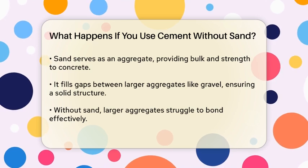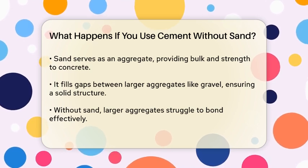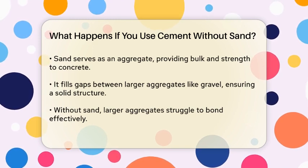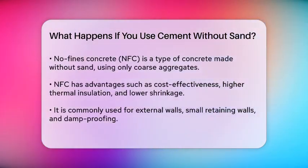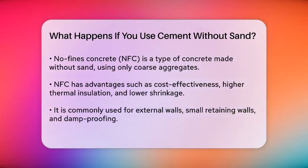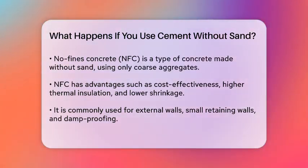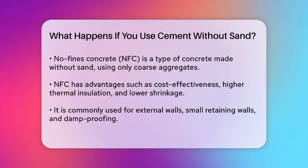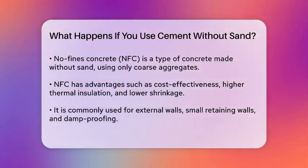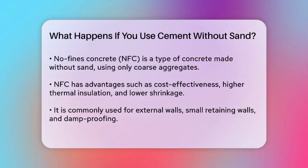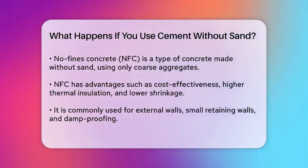There is, however, a type of concrete that can be made without sand, known as no-fines concrete, or NFC. In NFC, the fine material — sand — is eliminated, and only coarse aggregates are used. These aggregates are held together by a thin layer of cement paste. This type of concrete has its own set of advantages, such as being more economical in materials, having higher thermal insulation, lower shrinkage, and lower unit weight.